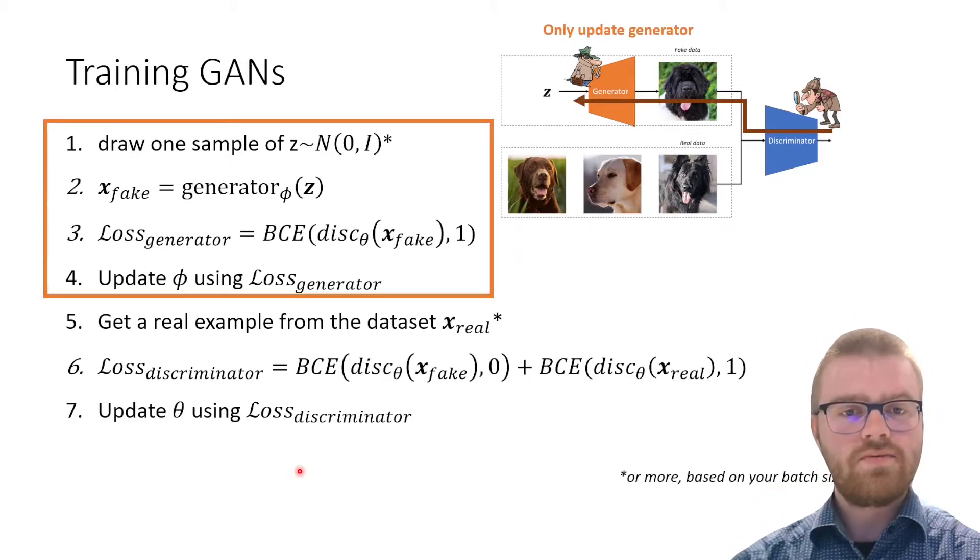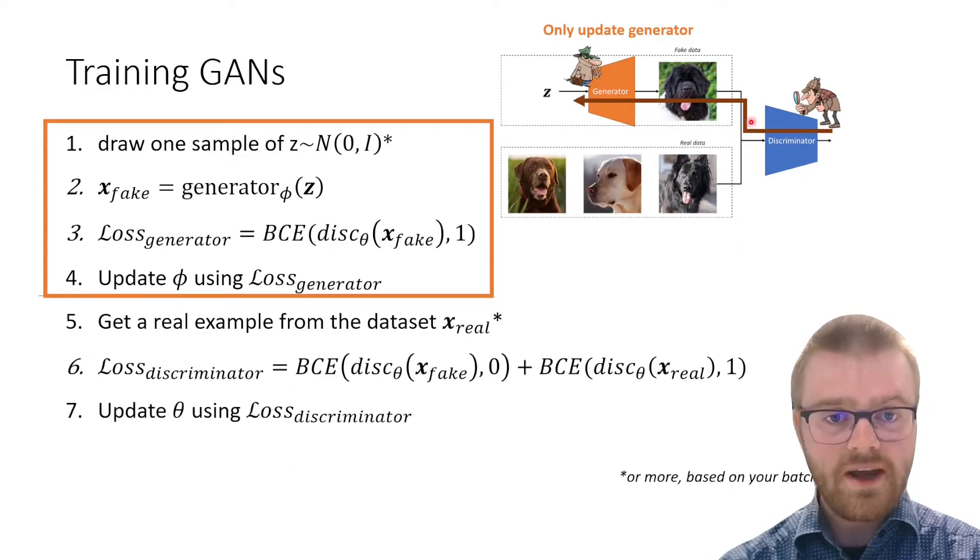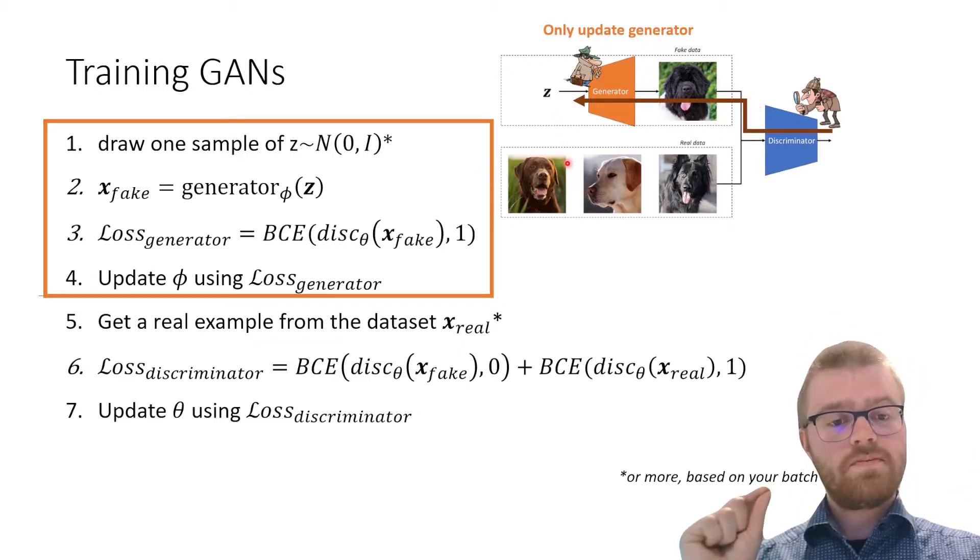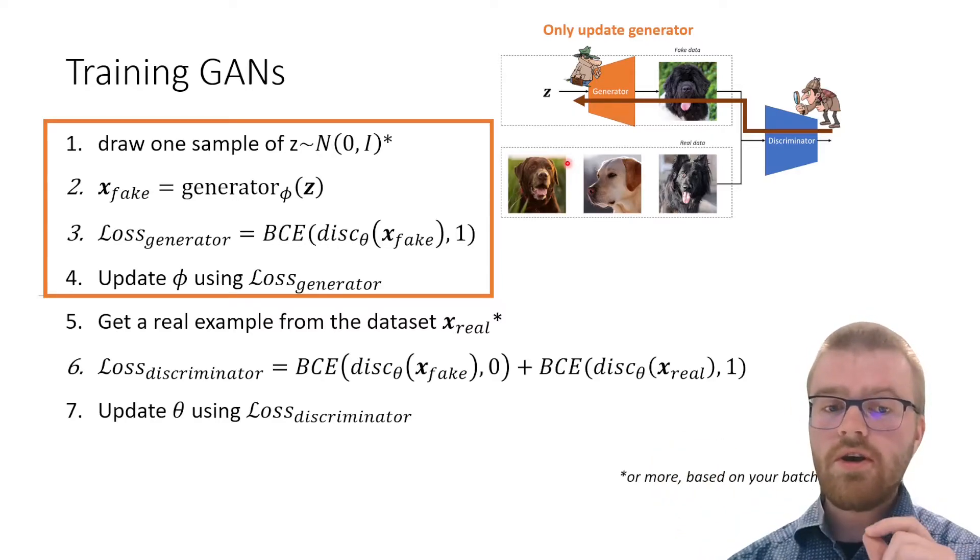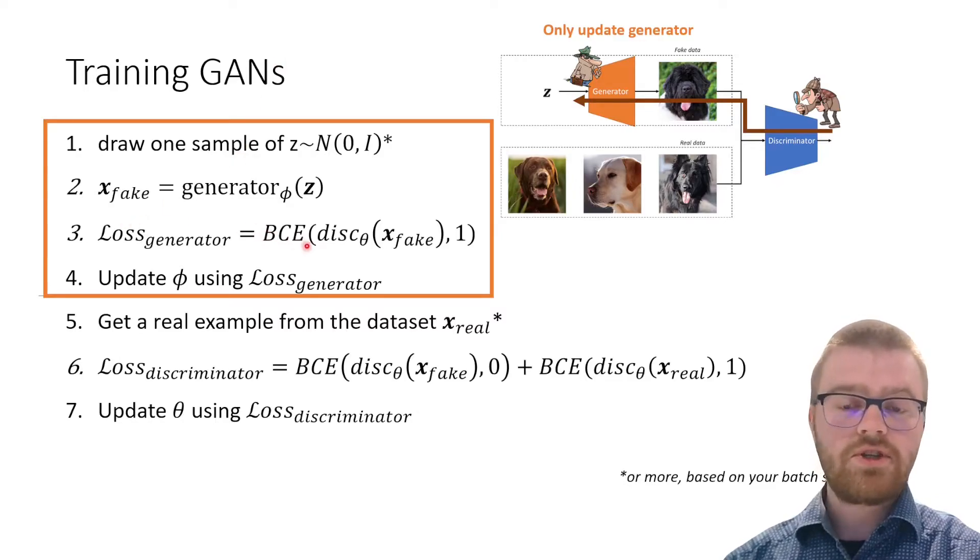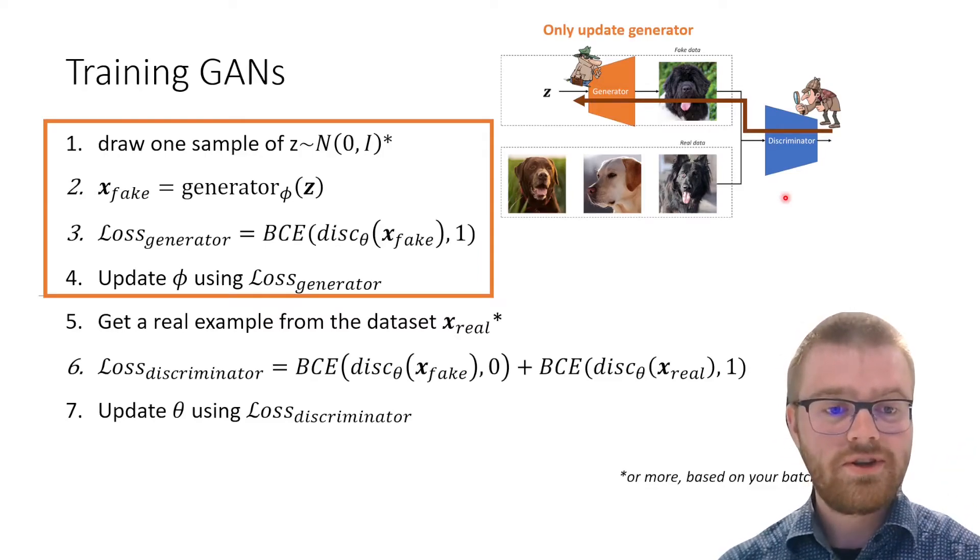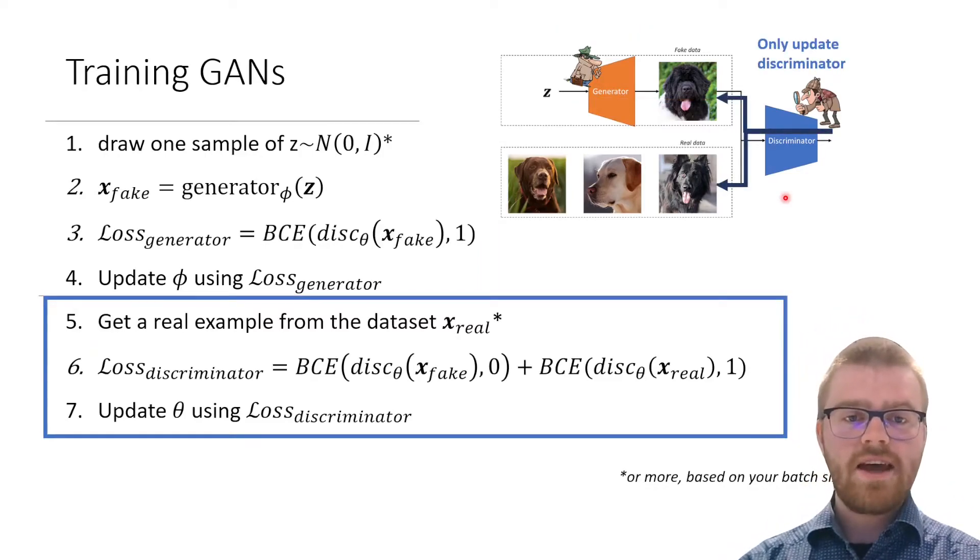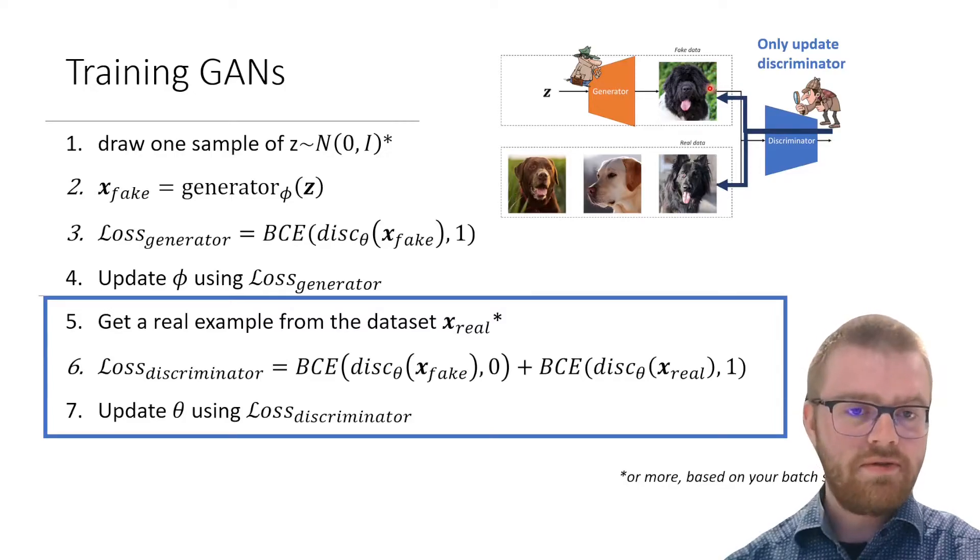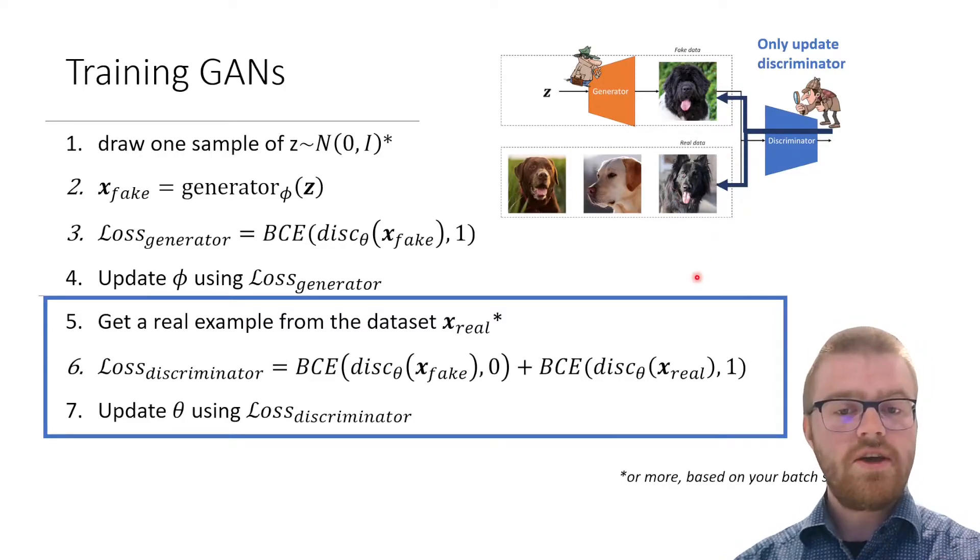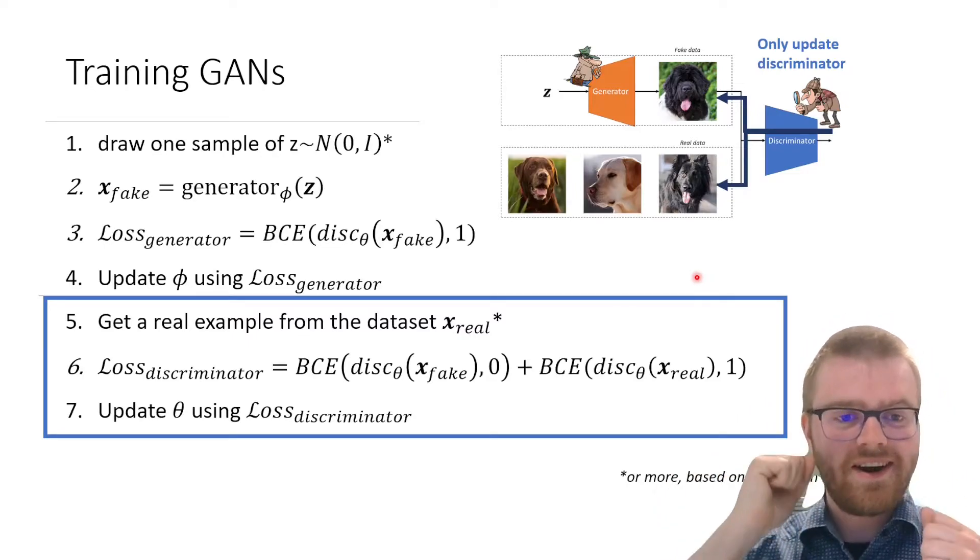During backprop, in the first step, we have to backpropagate both through the discriminator as well as the generator. We need these partial derivatives all the way back to Z. But we only update phi, we only update the generator using this loss function. Because if we were to update the discriminator, we would be going in the wrong direction. In the second step, we only need to backprop through the discriminator. And we end at both the fake data and the real data. Then we update the parameters theta. We constantly go back and forth between updating the generator and the discriminator.